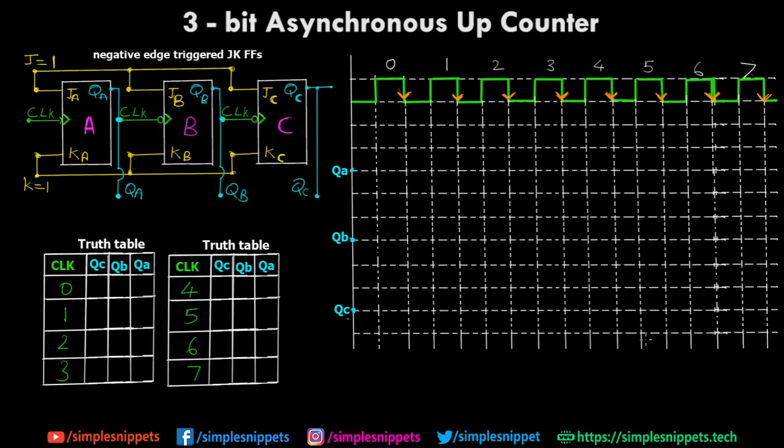Hey, what's going on guys? Welcome back to a new video tutorial under digital electronics. Today we're going to be looking at a 3-bit asynchronous up counter. In the previous couple of videos we've been talking about counters — if you don't know what counters are, check out the previous two videos where we covered a theoretical as well as practical understanding at a basic level. This topic is going to cover the 3-bit asynchronous up counter.